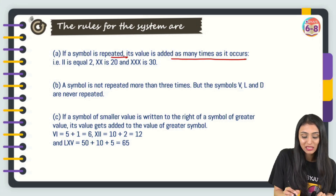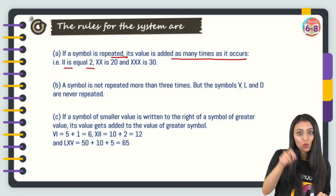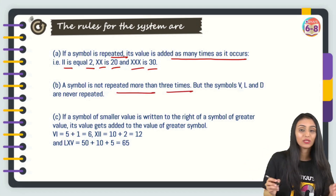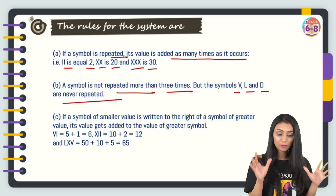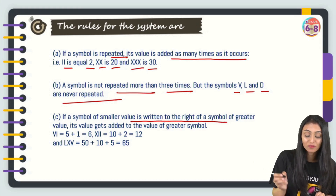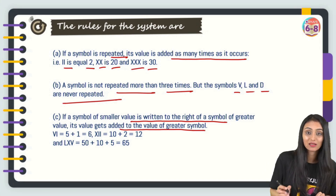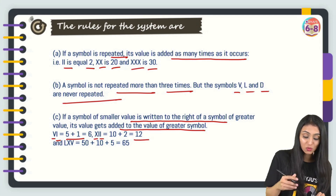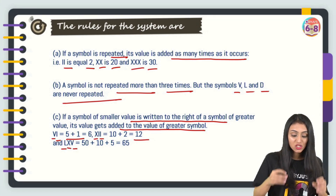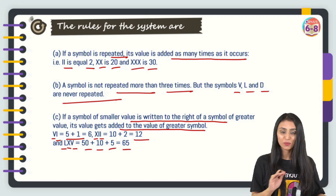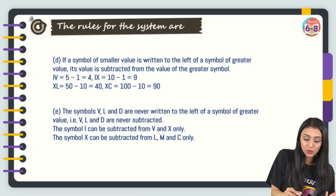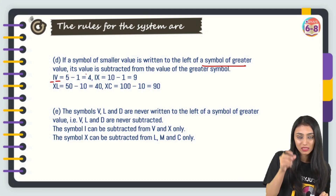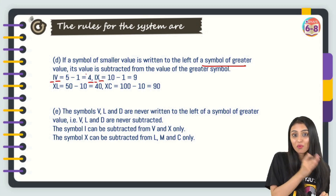Now let's look at the rules of the Roman numeral system. Rule 1: If a symbol is repeated, its value is added as many times as it occurs — e.g., II = 2, XX = 20, XXX = 30. Rule 2: A symbol is not repeated more than three times; V, L, and D are never repeated. Rule 3: If a symbol of smaller value is written to the right of a greater symbol, its value is added — e.g., VI = 6, XII = 12, LXV = 65. Rule 4: If a symbol of smaller value is written to the left of a greater symbol, its value is subtracted — e.g., IV = 4, IX = 9, XL = 40, XC = 90.